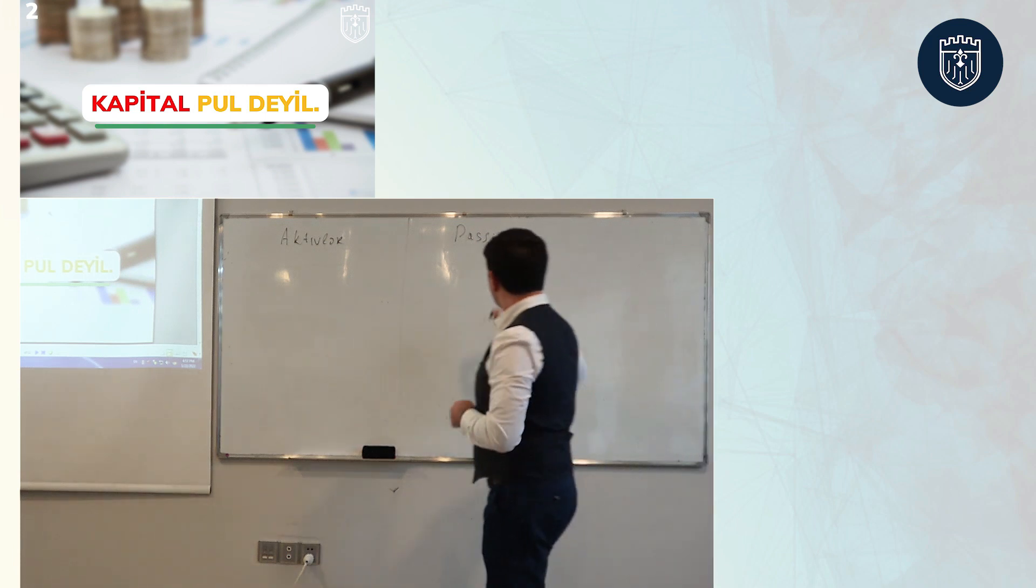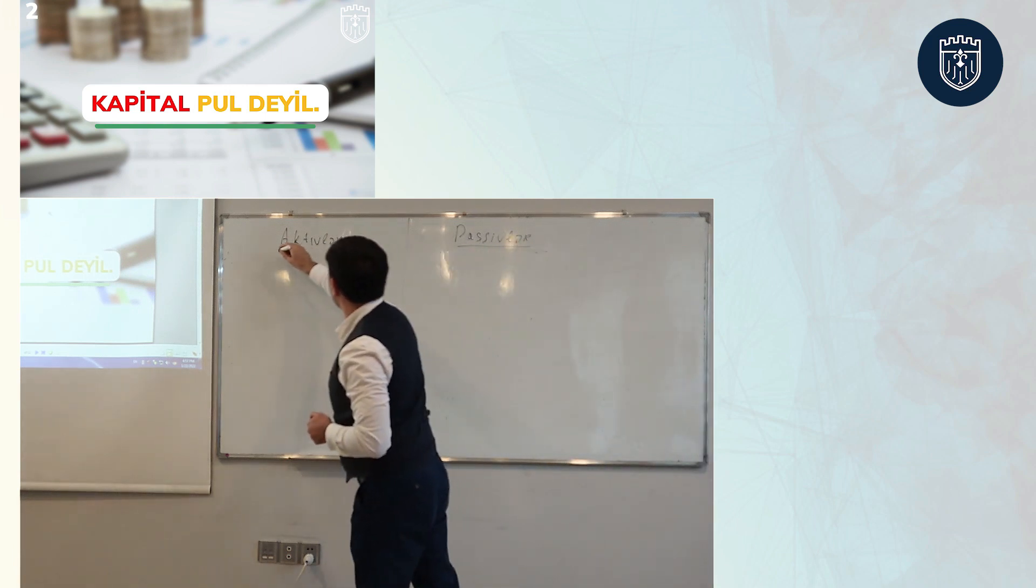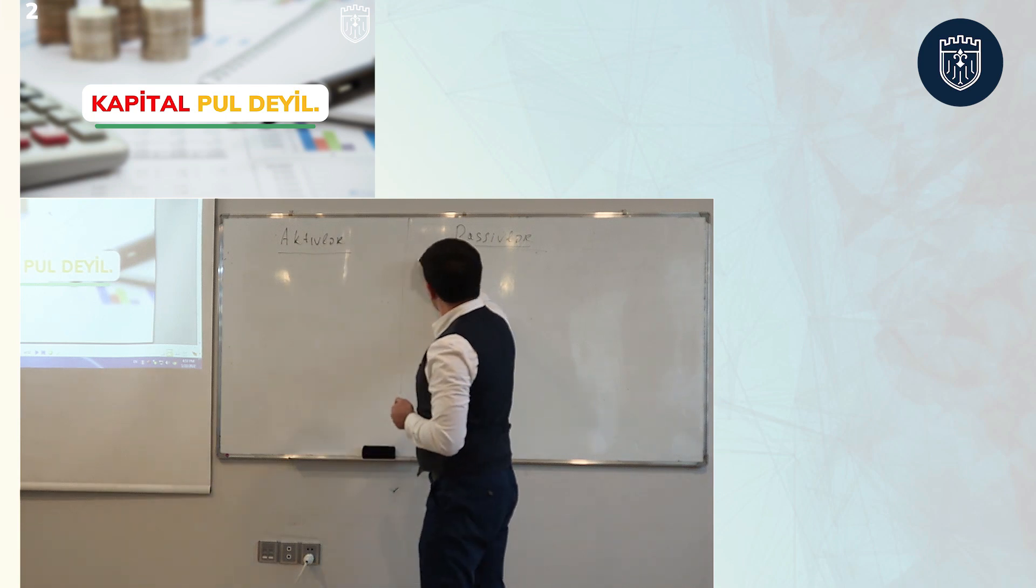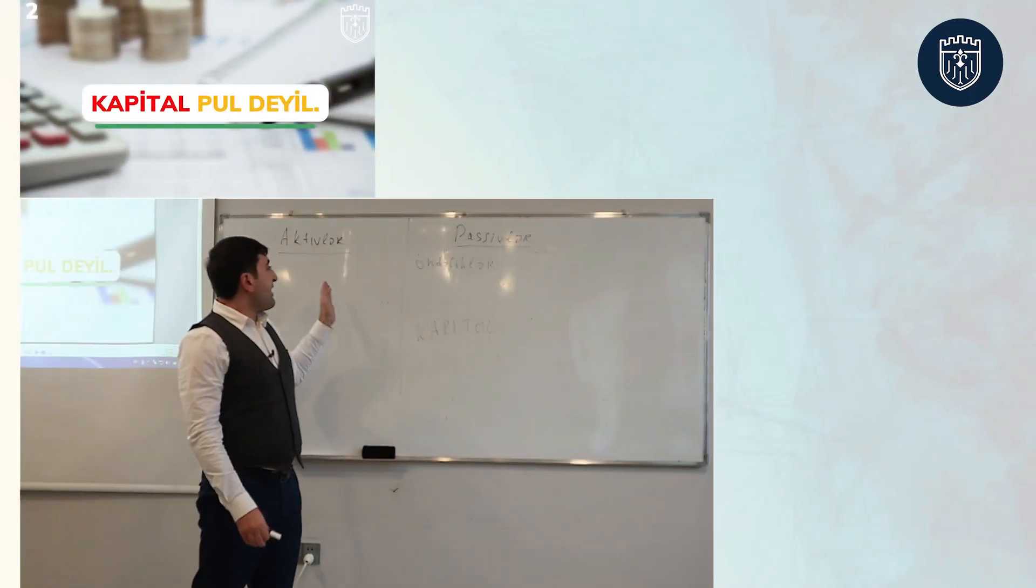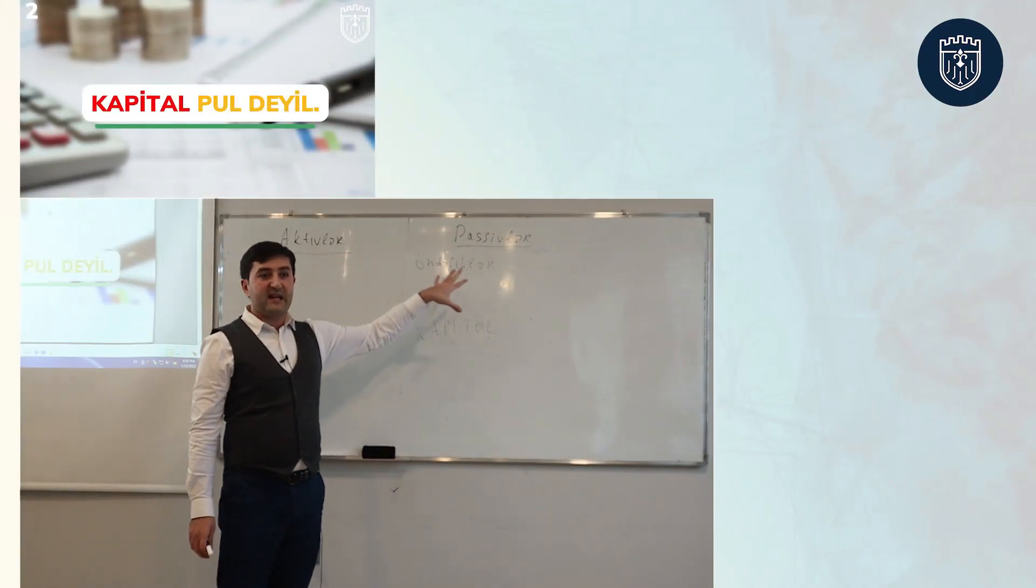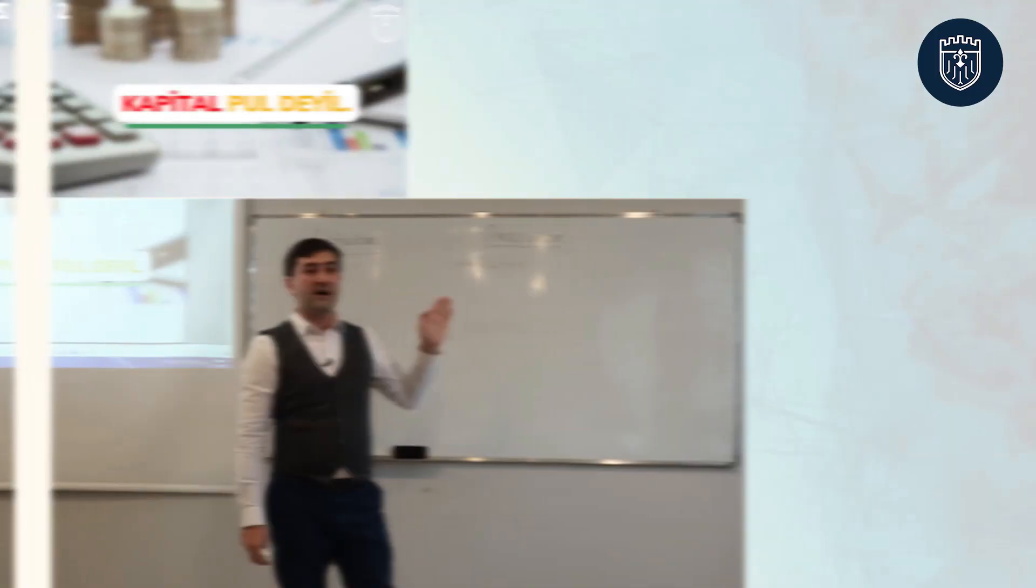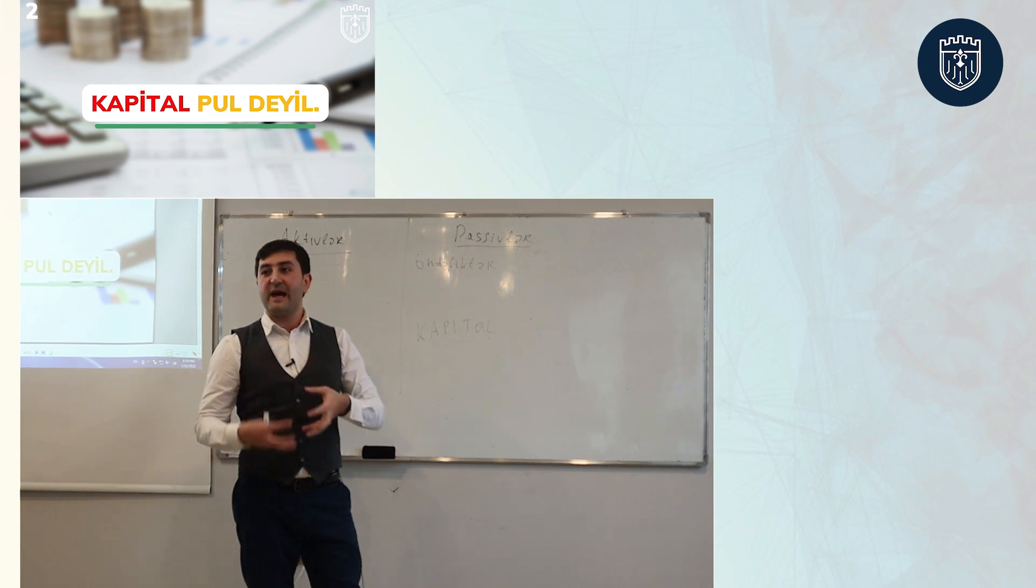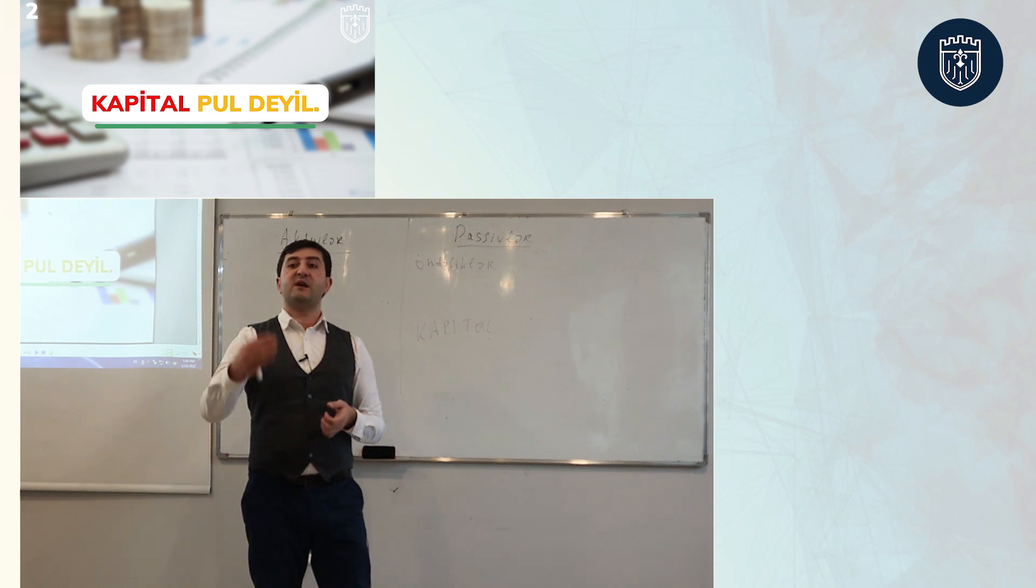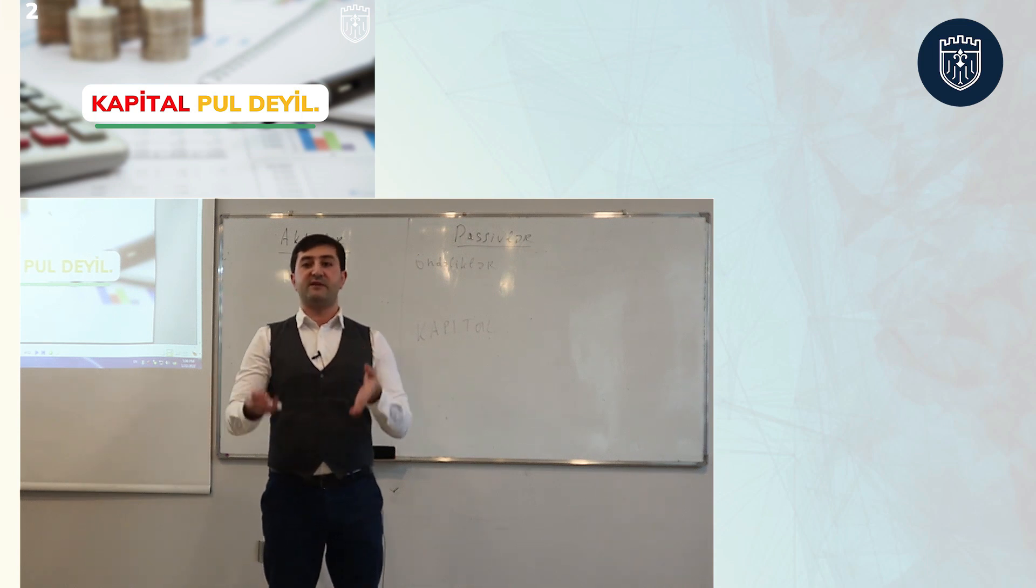Aktivlər ibarətdir: pul, mal, avadanlıq, əsas vəsait, qeyri-maddi aktivlər, verilmiş avanslar, debitor borcu, qiymətli kağızlar və s. Pasivlər isə iki hissədən ibarətdir: öhdəliklər və kapital. Pasivlərlə aktivlərin arasındakı əsas fərq nədən ibarətdir?